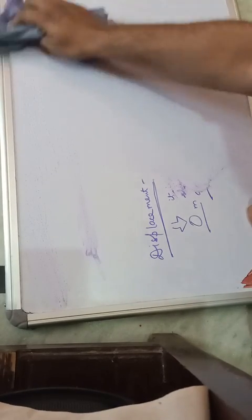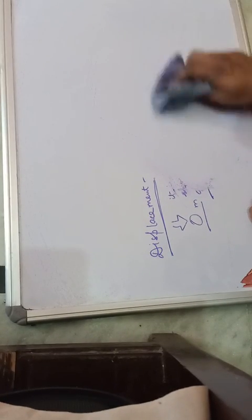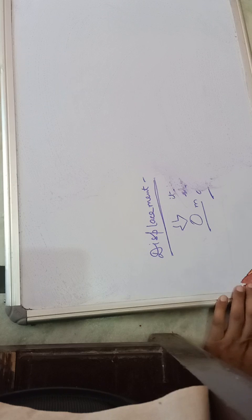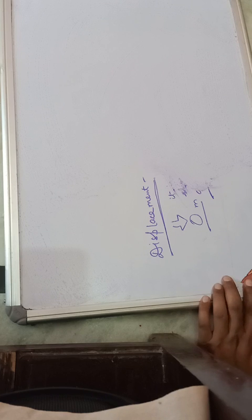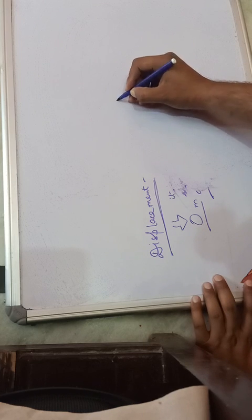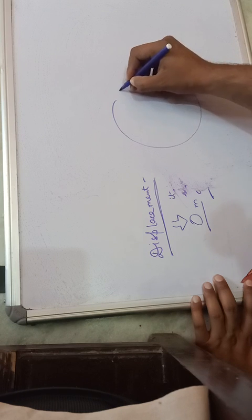So from this we understand: distance is the path covered in the time taken. Displacement is the shortest distance between the starting and ending point. If the starting and ending points are the same, displacement is zero.